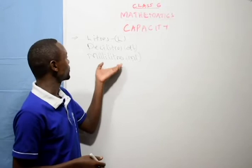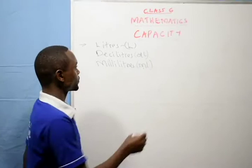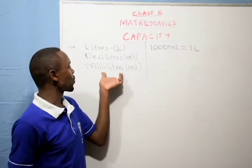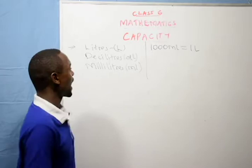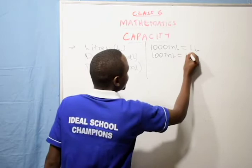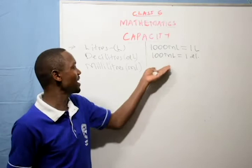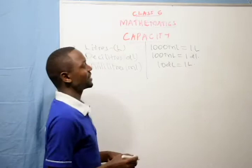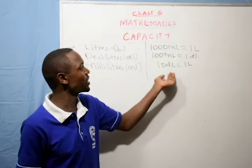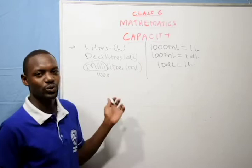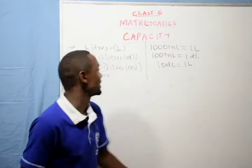The relationship between the units of capacity: 1,000 milliliters is equal to 1 liter. If you have a container that holds 1,000 milliliters of water, we say it has 1 liter. Because milli means 1,000 — it is 1,000 milliliters for 1 liter.